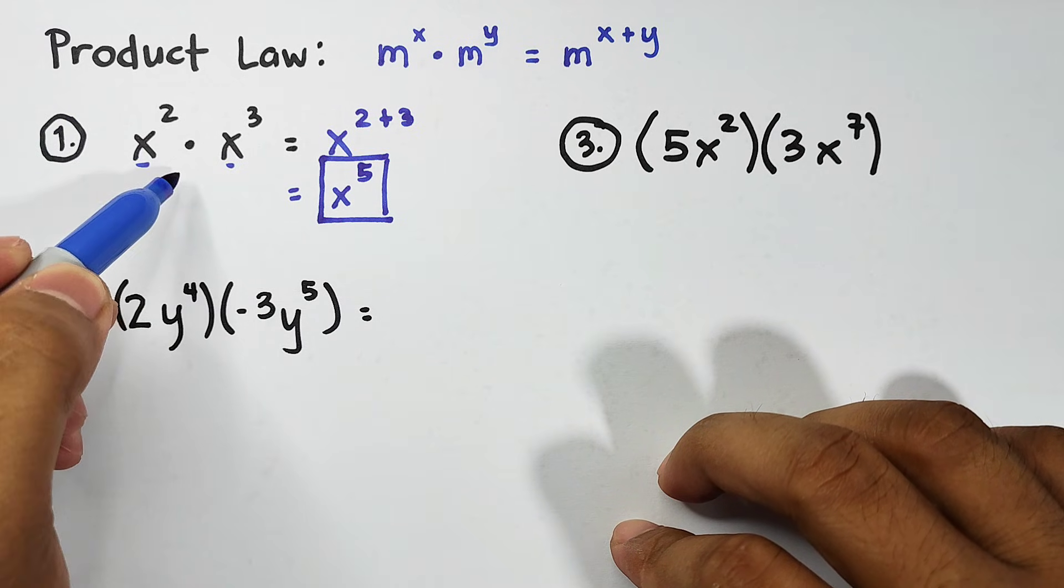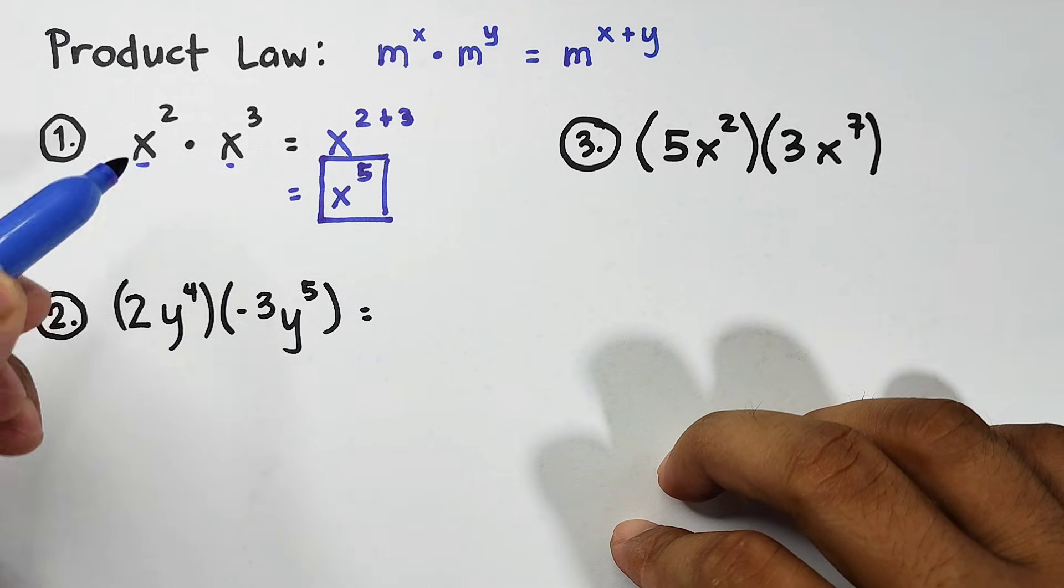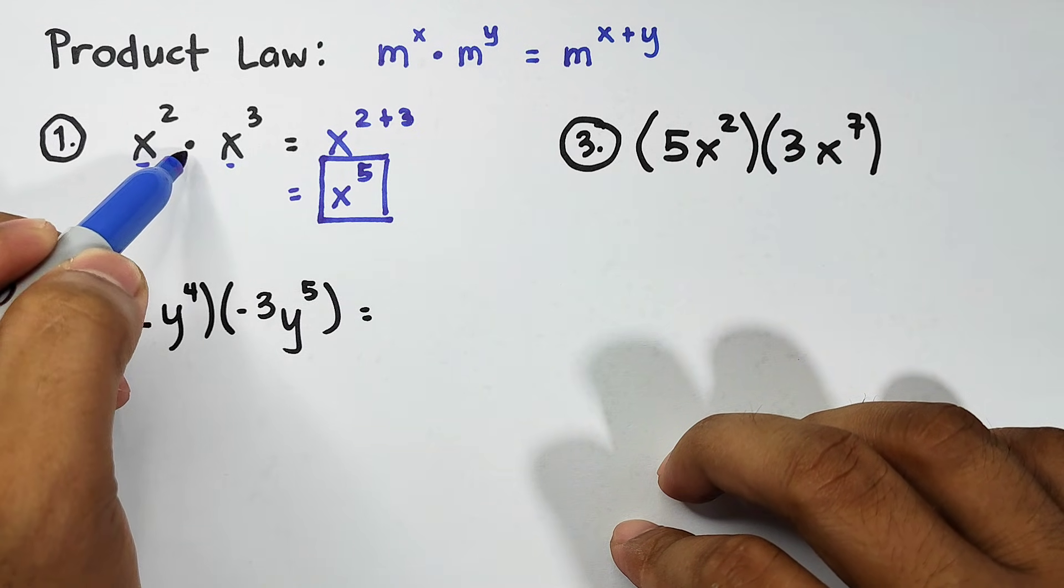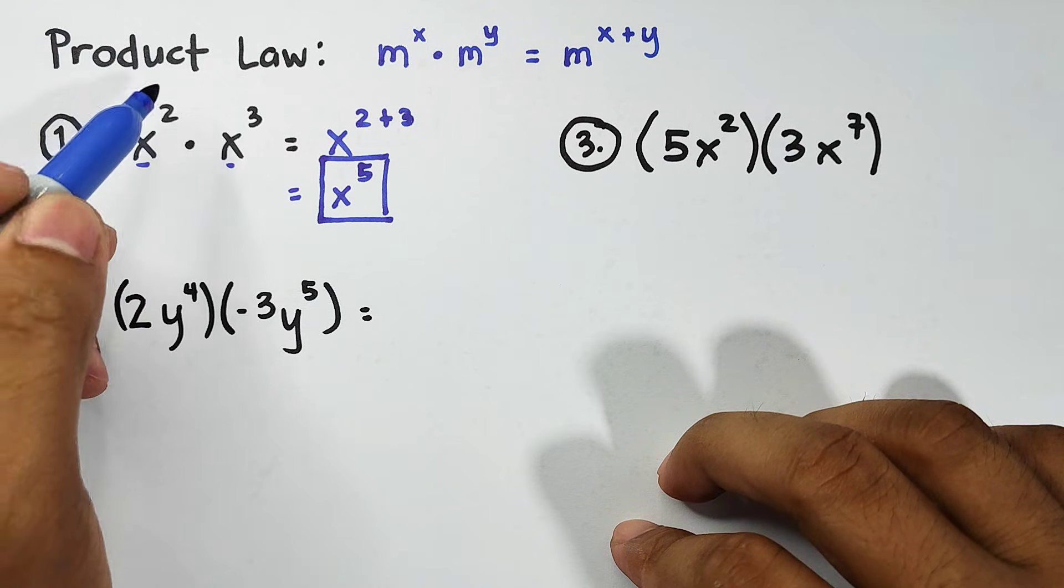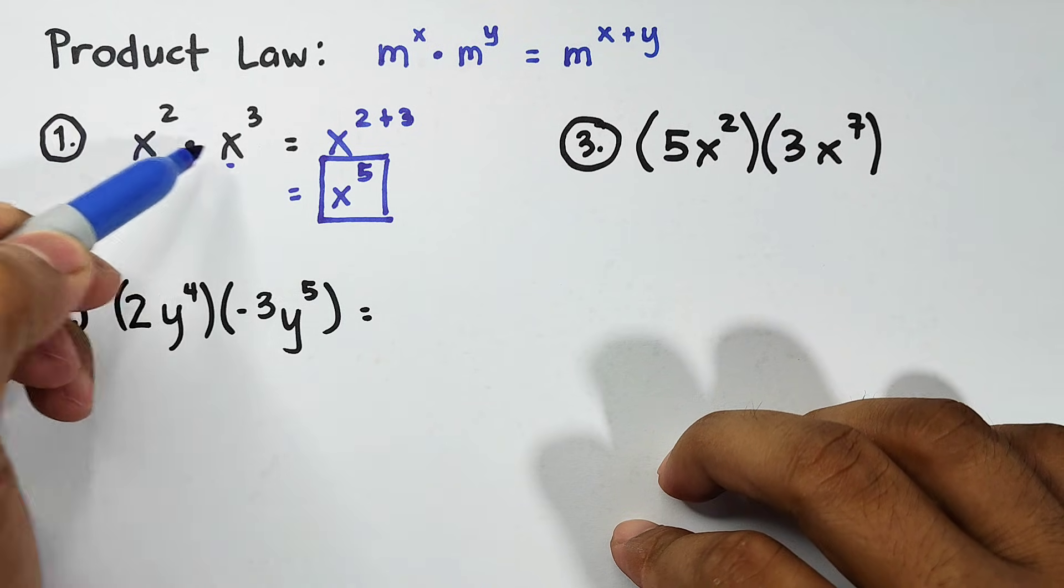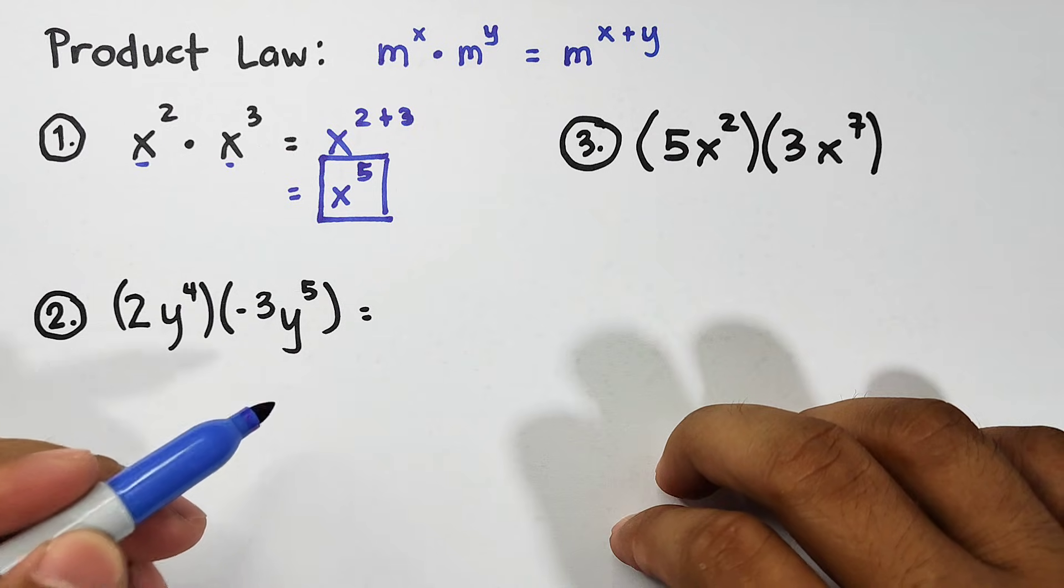Again, guys, don't be confused. Don't get me wrong. This one is multiplication. But what we need here regarding product law is to simply add exponents. Okay? That's how it works.